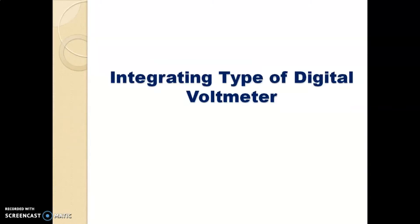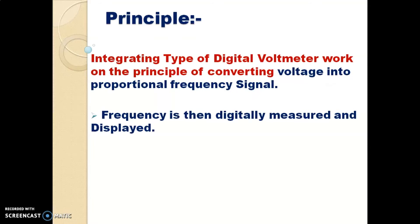So friends, first of all we will start with integrating type of digital meter — the digital voltmeter. We can also say that this is a voltage to frequency converter. This integrating type of digital voltmeter is based on the principle of converting the voltage into a proportional frequency signal.